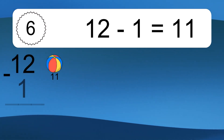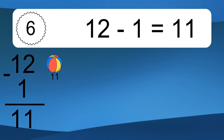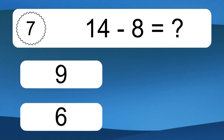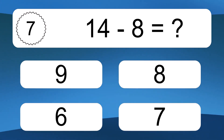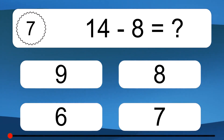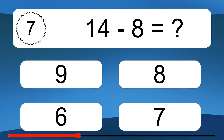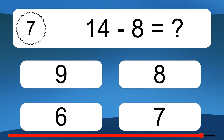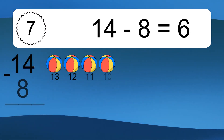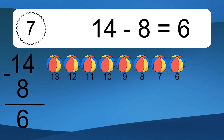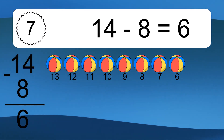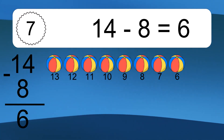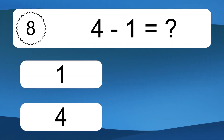12 minus 1 equals what? 12 minus 1 equals 11. Let's count it: 11. 14 minus 8 equals what? 14 minus 8 equals 6. Let's count it: 13, 12, 11, 10, 9, 8, 7, 6.